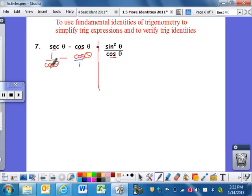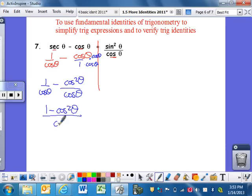So, I have cosine theta. I need to get a cosine theta on this side on the bottom, so I have one over cosine theta minus, what's cosine times cosine on top? Cosine squared theta over cosine theta. Since I have a common denominator, I now can combine them. So, the top becomes one minus cosine squared theta over my denominator or common denominator of cosine theta.